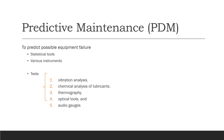To predict possible equipment failure, since we're predicting, we use statistical tools. You think 360 degrees around every possible thing that can happen to that system.